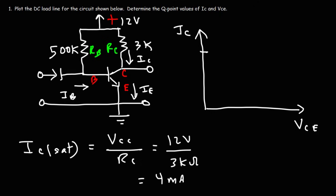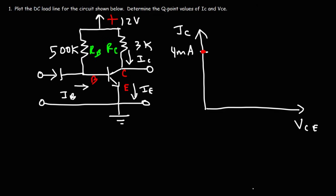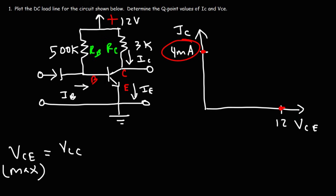So that's the first point to plot on the DC load line — the maximum collector current. The maximum VCE value is the collector supply voltage; VCE cannot exceed 12 volts. That's our x-intercept, and the y-intercept is our saturation collector current. Once we have these two points, we simply connect them with a straight line.